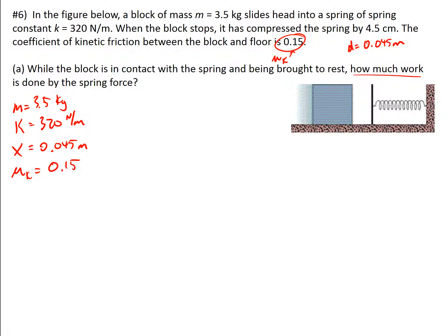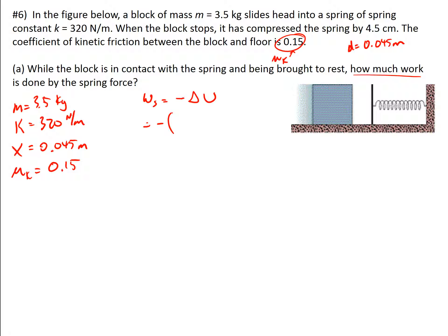We know that work is going to be our change in energy — when you do work to an object, you are giving it or taking away energy. So the work done by the spring is going to be its negative change in potential energy. And our change in potential energy is final minus initial, so the work is negative of the final minus initial spring potential energy.